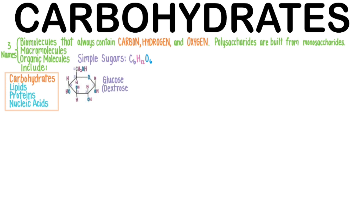Dextrose is the term used for glucose in its purified form that's administered in IVs or other medical settings. The two other main six-carbon monosaccharides are fructose and galactose. Ribose and deoxyribose are the five-carbon sugars in the sugar phosphate backbone of nucleic acids, but they are rarely discussed when talking about carbohydrate roles in the body.